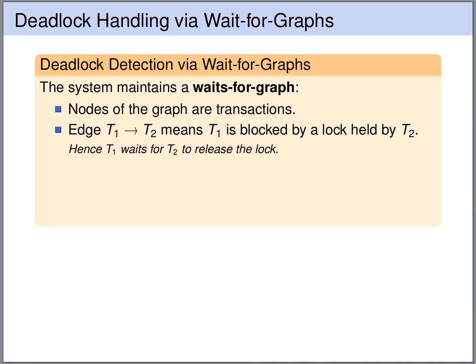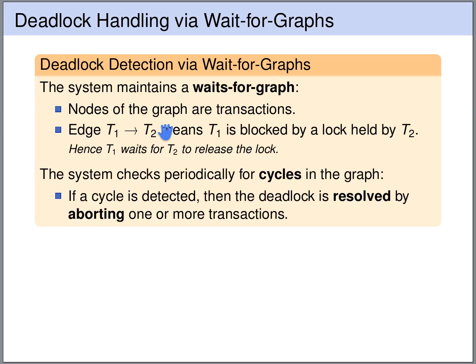One way to perform deadlock detection is via wait-for graphs. The nodes of this graph are the transactions that are currently running, and we have an edge from transaction 1 to transaction 2 if transaction 1 is blocked by a lock held by transaction 2 — so the source of the edge waits for the target. The system constructs this wait-for graph on the fly and periodically checks whether there are cycles in the graph. If there is a cycle, we have a deadlock, and we resolve it by aborting one or more transactions on the cycle.